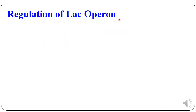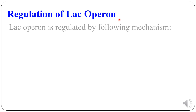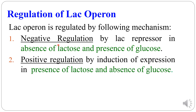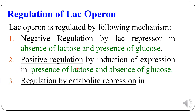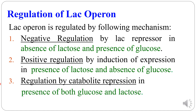Now that we have understood the concept of operon, let us look at how the lac operon is regulated. Lac operon is regulated by three mechanisms. First is negative regulation, done by the lac repressor when lactose is absent and glucose is present. The second is positive regulation by induction of expression, in the presence of lactose and absence of glucose. The third is catabolite repression, in the presence of both glucose and lactose.